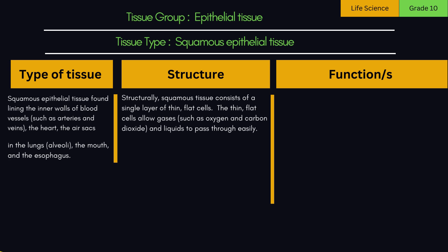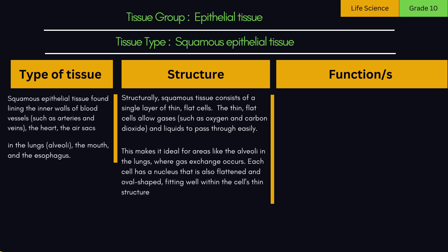The thin, flat cells allow gases, such as oxygen and carbon dioxide, and liquids to pass through easily. This makes it ideal for areas like the alveoli in the lungs, where gas exchange occurs. Each cell has a nucleus that is also flattened and oval-shaped, fitting well within the cell's thin structure.